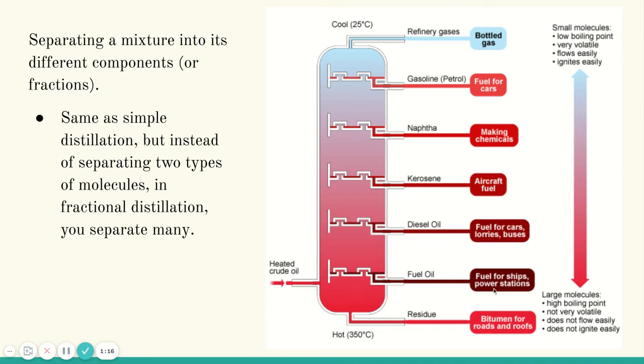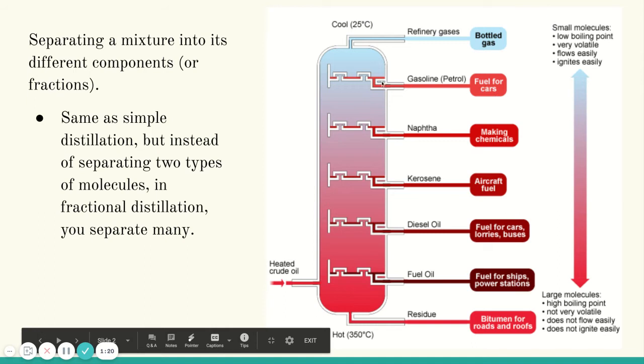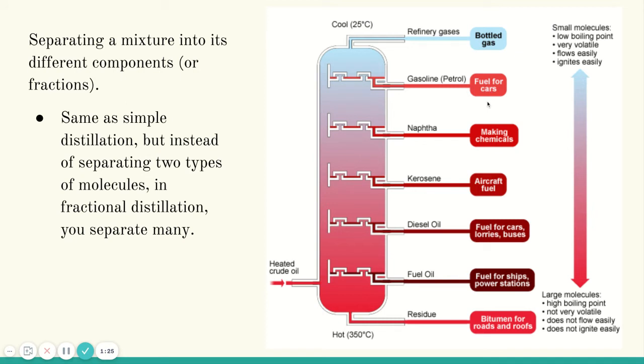And we use these different petroleums for all different kinds of things. So we use the smaller ones for cars, gasoline, that's usually octane, which is an eight carbon chain, making chemicals, aircraft, fuel, diesel. Diesel is what you see here. That's usually for like bigger trucks or buses or something.